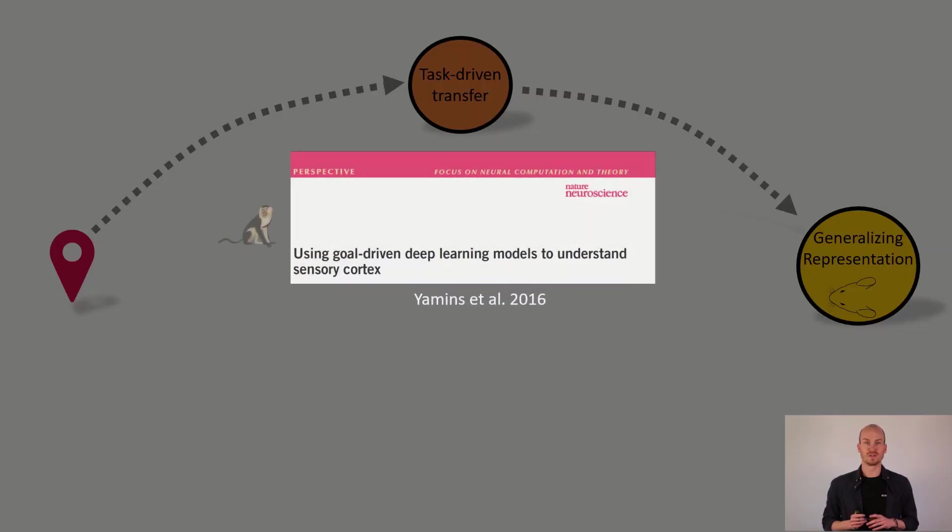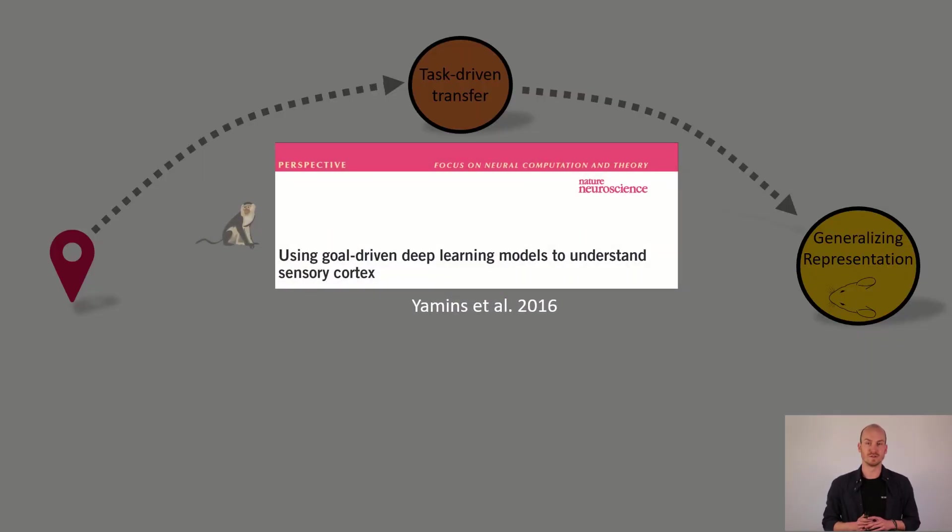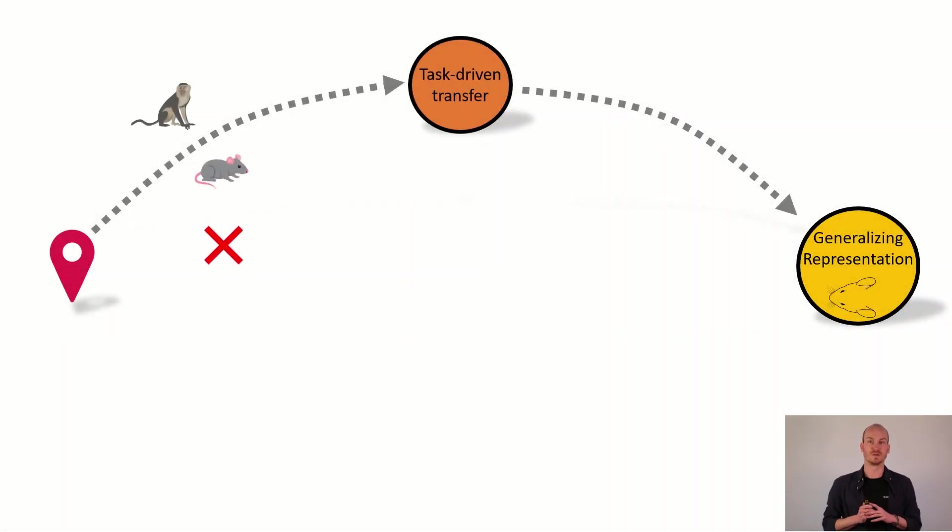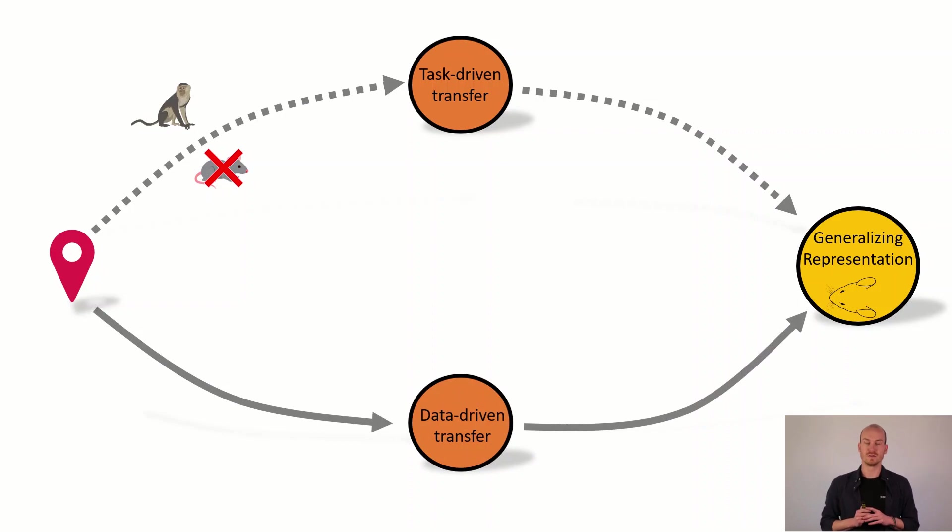So far so good. Now this approach has been proven to work really well with monkeys and is well discussed in Yamins et al. 2016. However, there has been growing evidence that with mice it doesn't work so well. So what do we do now if we want to obtain these generalizing representations for mice? We propose the data-driven transfer.